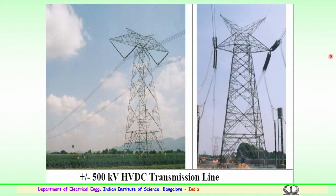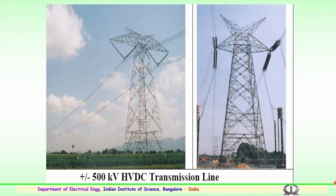Now coming to HVDC towers: there is a difference between HVAC and HVDC transmission lines. The configuration varies with the load requirement, mechanical loads change, conductors are different, and the tower configuration also changes depending upon clearances. The towers indicated are for the high voltage DC transmission system, and there is a design change compared to AC transmission. These are typically used for ±500 kV systems.